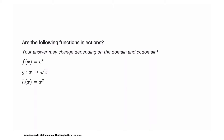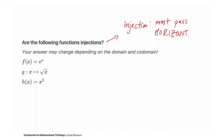A nice property that lets us determine whether a function is injective is that it must pass the horizontal line test. If you think back to when you learned about the vertical line test for functions, we saw that for some relationship or graph to be a function, it must pass the vertical line test.